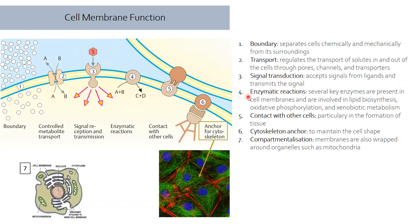The function of the cell membrane can be summarized into seven points. First, it acts as a boundary, separating the intracellular compartment from the extracellular environment. Second, it's responsible for transport regulation — it regulates whether substances can pass into or out of a cell. Third, it's involved in signal transduction: how a cell receives and conveys signals into the intracellular compartment.